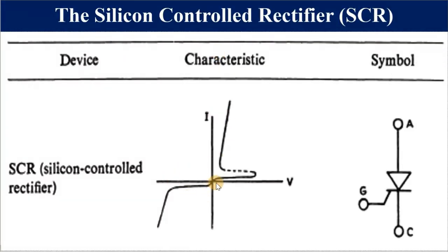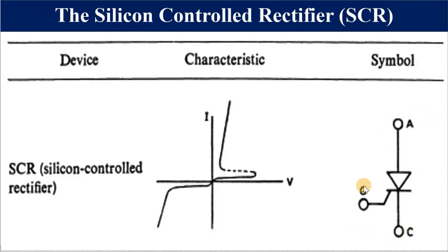This is the conduction characteristic of a Silicon Controlled Rectifier — a graph of voltage against current. When voltage is increased, the amount of current flowing is very low until a certain voltage is reached. Then the voltage across the SCR starts decreasing. This shows when the SCR is on and when it is off. The symbol: A stands for anode, C for cathode, and G for gate.